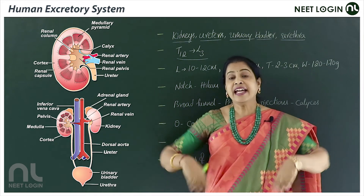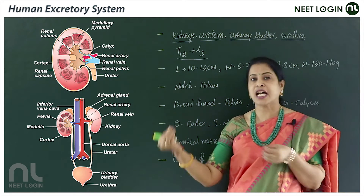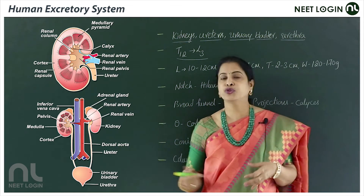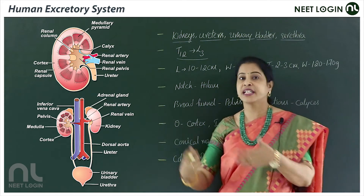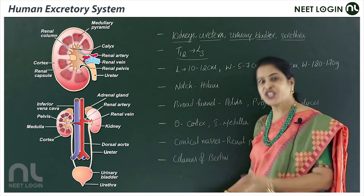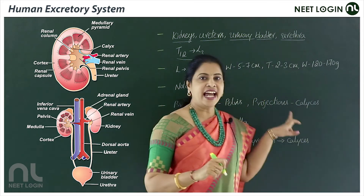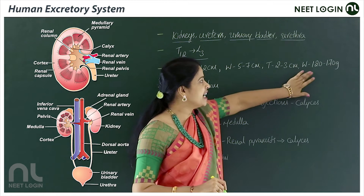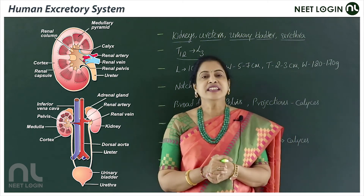The kidneys are attached to the dorsal abdominal wall and are called retro-peritoneal organs. Their measurements are about 10 to 12 centimeters in length, 5 to 7 centimeters in width, and 2 to 3 centimeters in thickness. Their weight is around 120 to 170 grams.